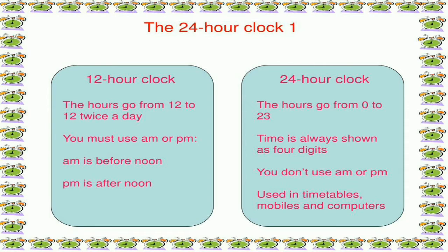Now the 24-hour clock. The 12-hour clock: the hours go from 12 to 12 twice a day and you must use AM or PM. AM is before noon and PM is after noon. The 24-hour clock: the hours go from 0 to 23 and time is always shown as 4 digits. You don't use AM or PM — it's used in timetables, mobiles and computers. In a day we have 24 hours.